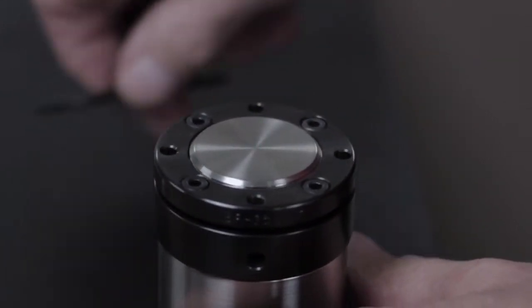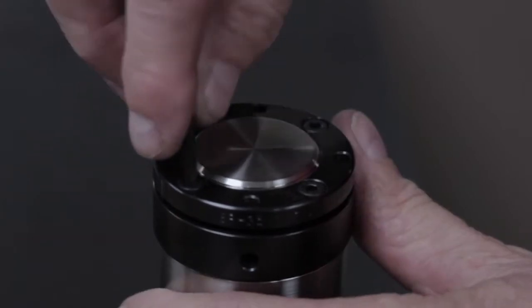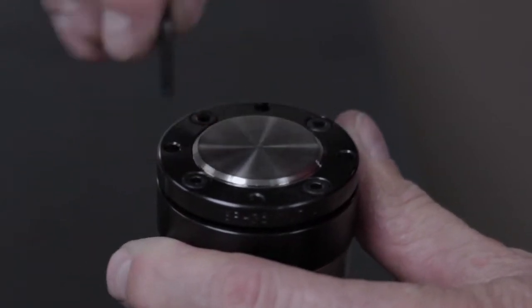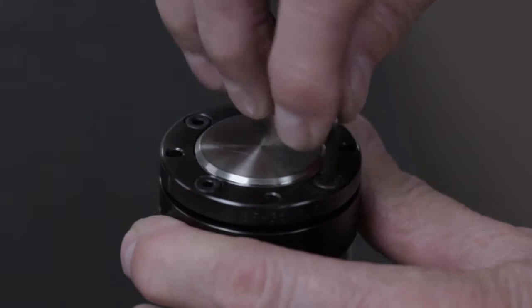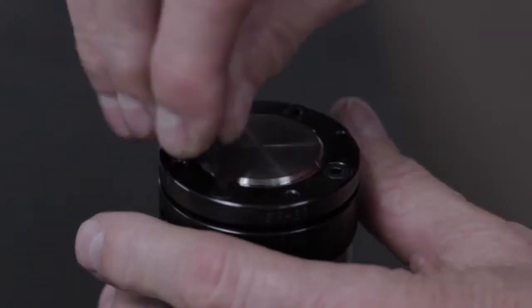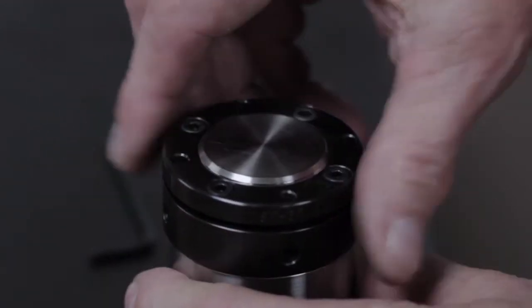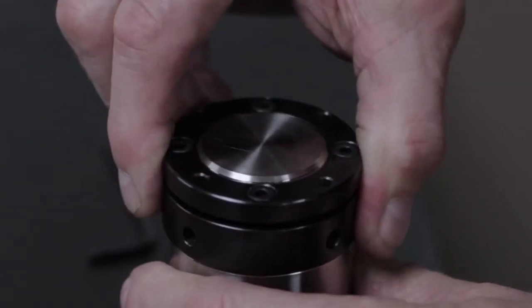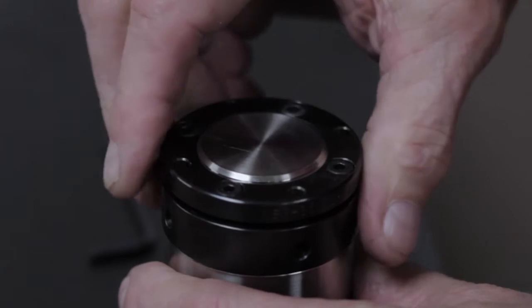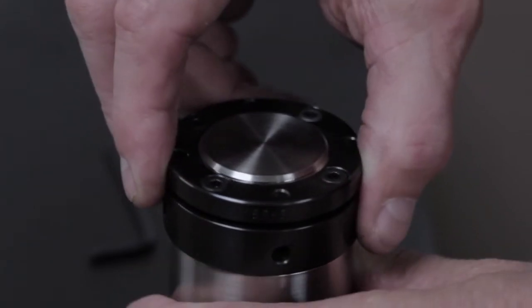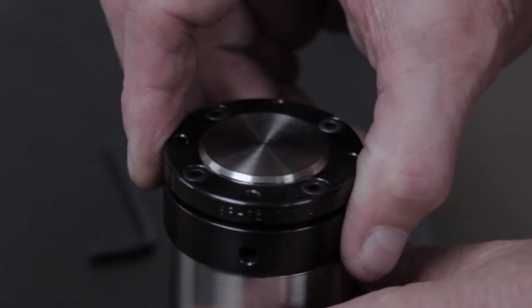Tighten the clamping screws in a diagonal sequence until you feel increased friction. The lock nut is now in the preload condition. Now you can bring the lock nut against the face.